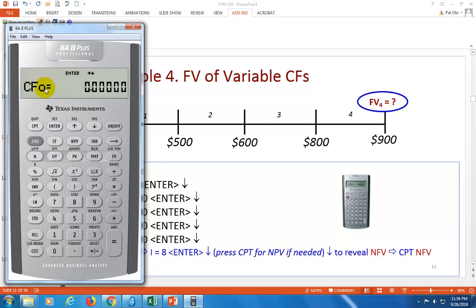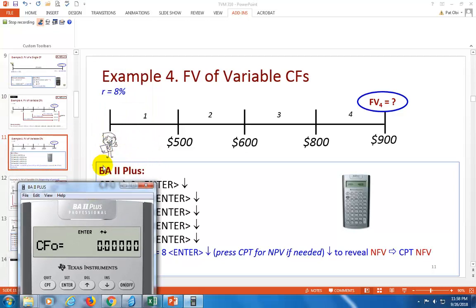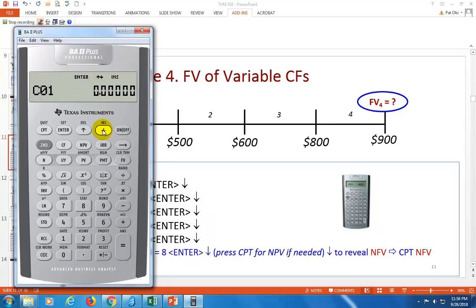Let's start. Cash flow sub-zero. Do we have any cash flow at time zero? We do not. So we're going to bypass it, click arrow down, and go to C1, which is 500. Hit enter. You're going to have to hit enter after every data input. Scroll down to C2, bypassing the frequencies, which is 600. Scroll to C3, which is 800. And finally, scroll to C4, which is 900, enter.